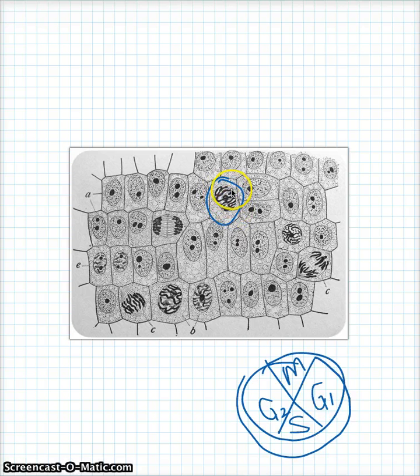So, that's how we can tell the difference from prophase and then interphase. Here's another prophase. It's a little bit earlier in prophase. Again, you can still see the little nucleolus, but you can start to see the chromosomes. Prophase. Look, another prophase.